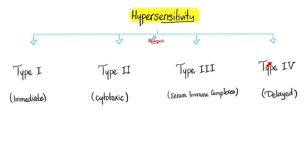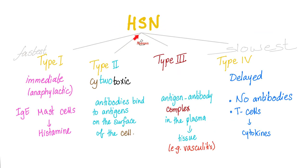Hypersensitivity: Type 1 is immediate, but Type 4 is delayed. Type 2 is cytotoxic. Type 3 has free antibodies — meaning the antibodies are floating in the plasma, not bound to cells. You can describe Type 3 by three words: serum immune complexes. Which one is the fastest? Type 1. Which one is the slowest? Type 4.